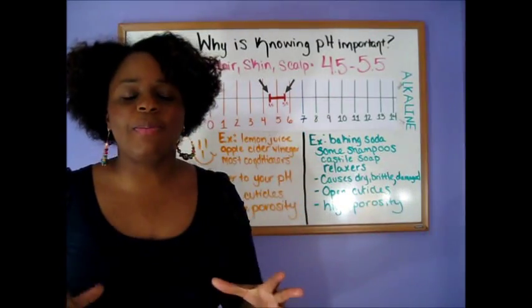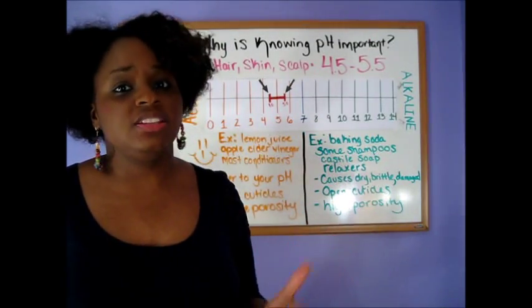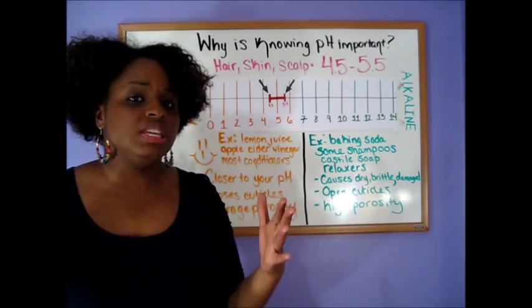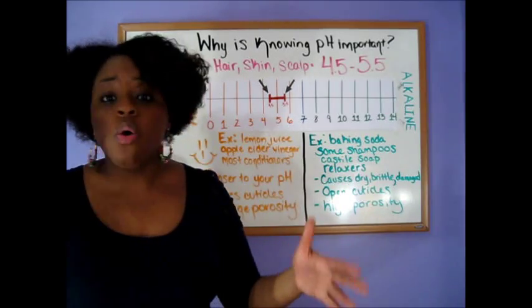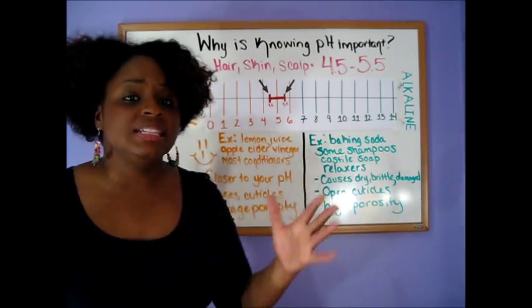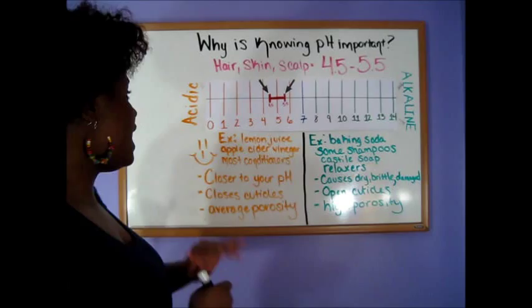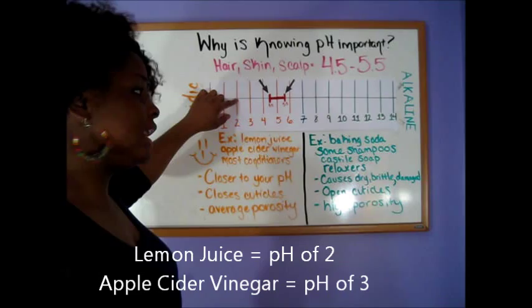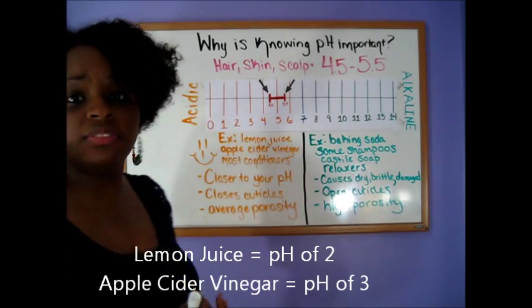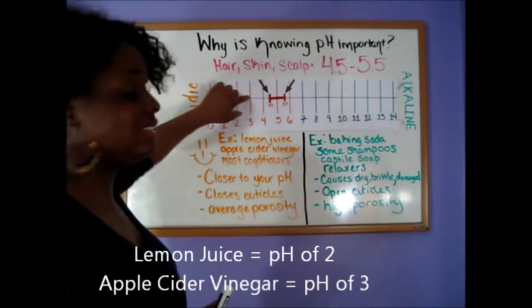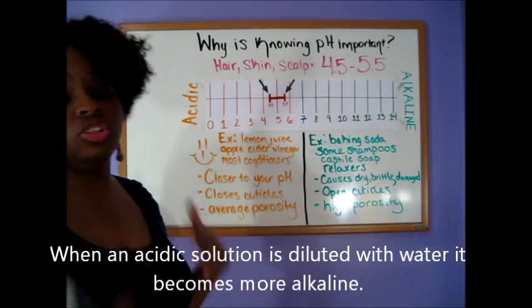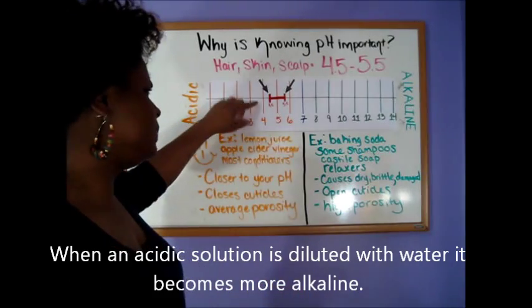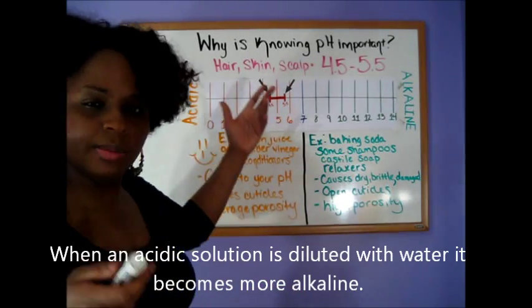Why is knowing pH important? Well, it's basically important because most of your products that you use in your hair are either acidic or they're alkaline. And to give you an example of what an acidic product is, it's usually lemon juice which is a 2 on the pH scale, or apple cider vinegar which is also a 3 on the scale. And once you dilute it, it increases with the alkalinity and becomes a little bit higher on the pH scale, which is about a 4.